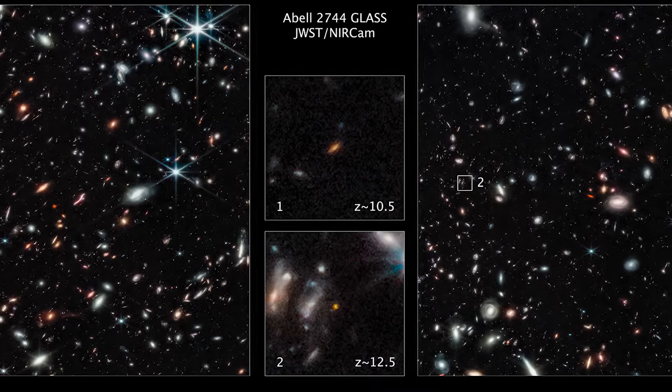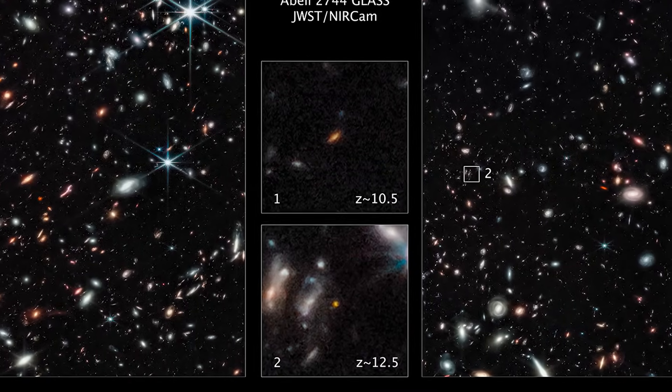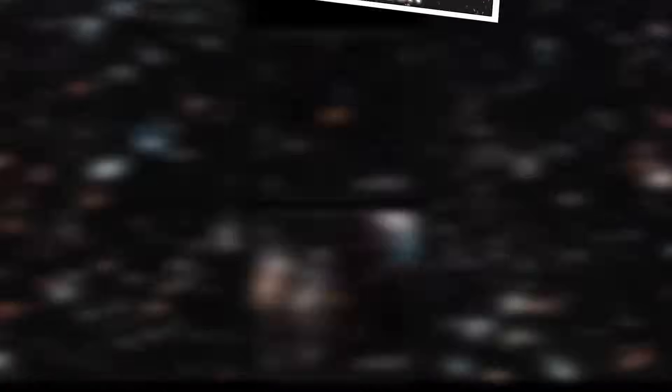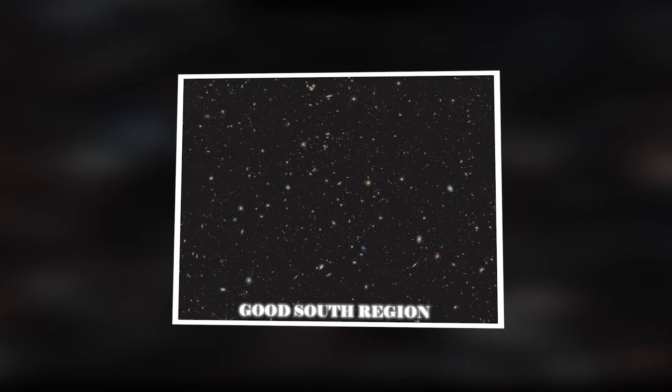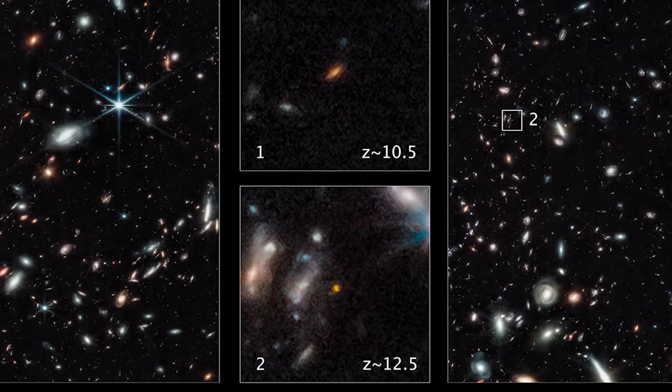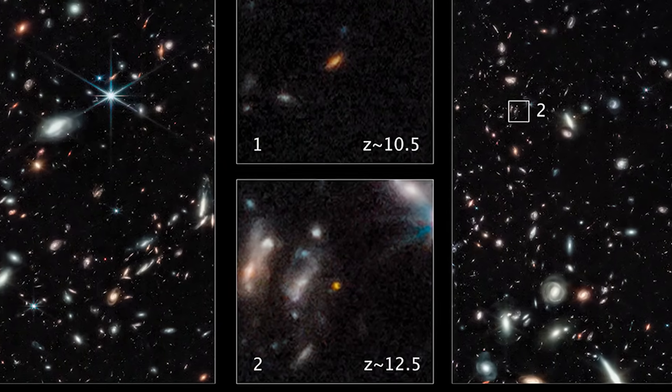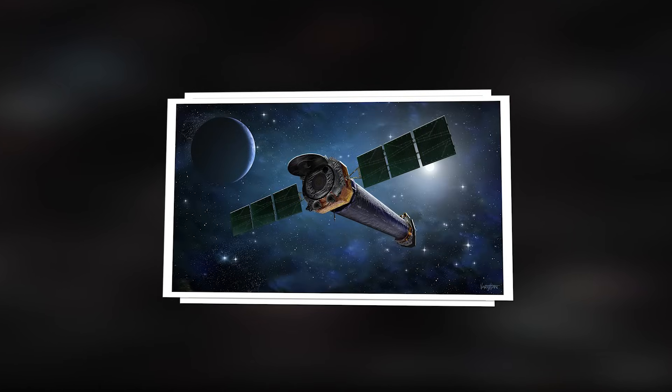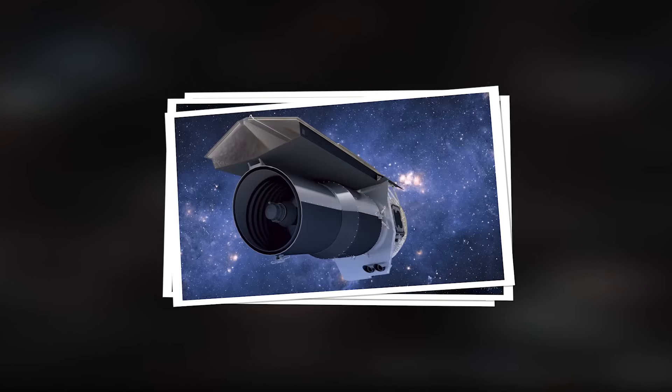These two specific regions where these young galaxies are located have an interesting name. They're collectively known as the GOODS South Region. This area of the sky is not new to astronomers. In fact, it's been extensively studied by nearly every major space telescope, including the Hubble Space Telescope, the Chandra X-ray Observatory, and even NASA's now-retired Spitzer Space Telescope.